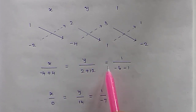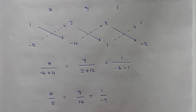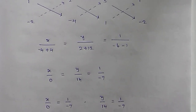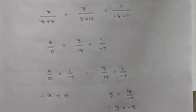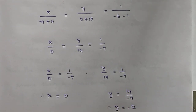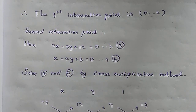Computing: x divided by (1×(−4) − (−2)×2) = x/0; y divided by (2×1 − (−4)×3) = y/14; and 1 divided by (3×(−2) − 1×1) = 1/(−7). So x = 0, and y = 14/(−7) = −2. Therefore the first intersection point is (0, −2).